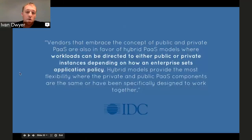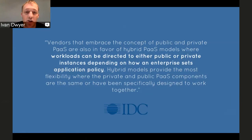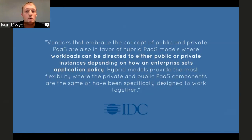I'll end things with a quote that basically perfectly frames this deployment model for both OpenShift and Iron.io. From IDC: this concept of public and private PaaS in a hybrid world is where workloads can be directed to either public or private instances, depending on how enterprises set application policy. That is exactly what we talked about — distributing workloads in different environments based on where they should be. Some are secure on-prem, some are less sensitive and can be done in the public cloud — but being able to direct those very easily is going to be super important for building out hybrid cloud solutions. Both OpenShift and Iron.io are all about being flexible and integrated nicely to work together.